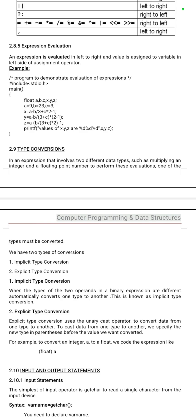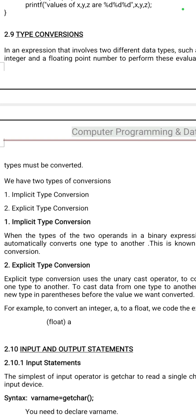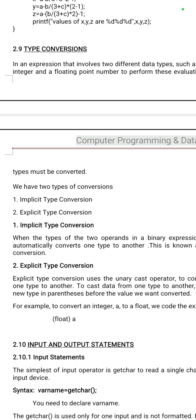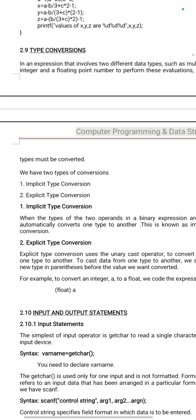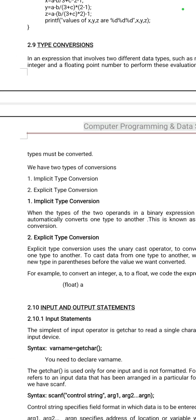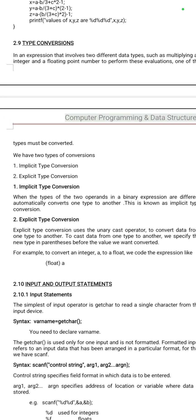There are two types of type conversions: implicit and explicit. Implicit conversion is also called automatic conversion — when a small data type is converted into a large data type. Explicit conversion is when a bigger data type is converted into a smaller data type.